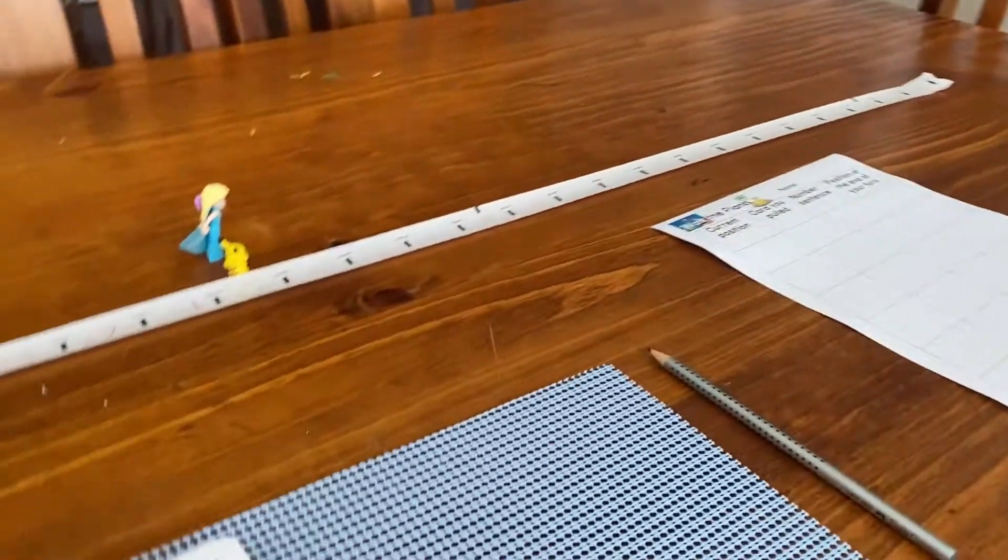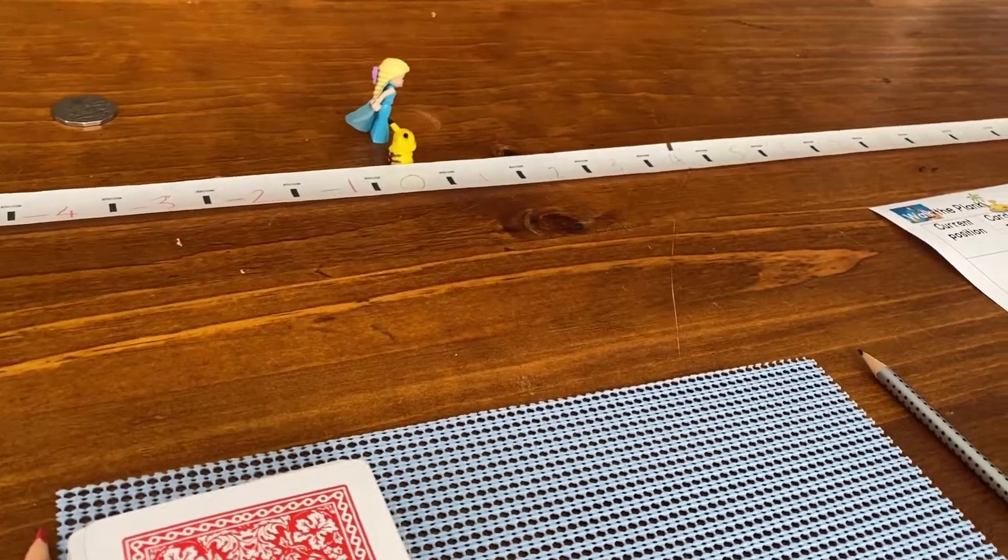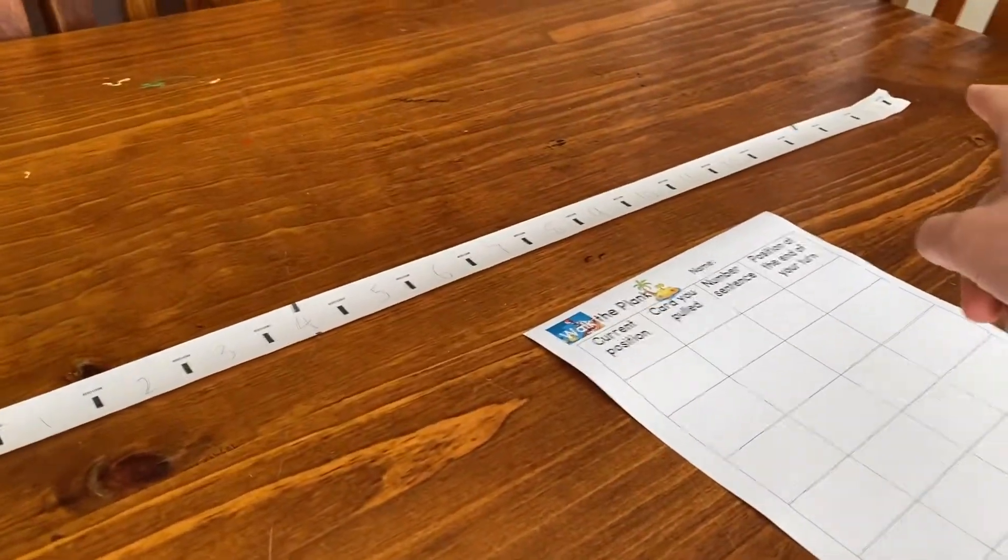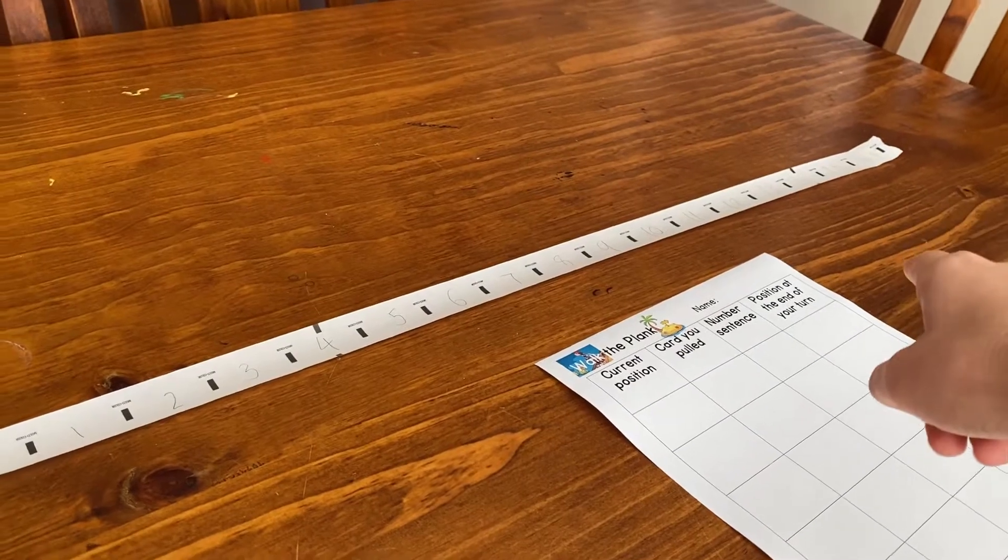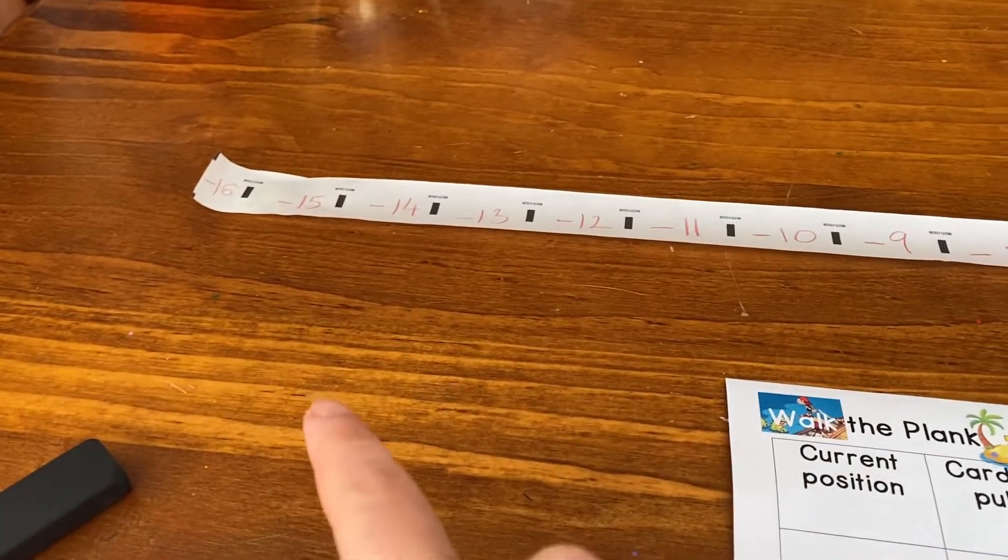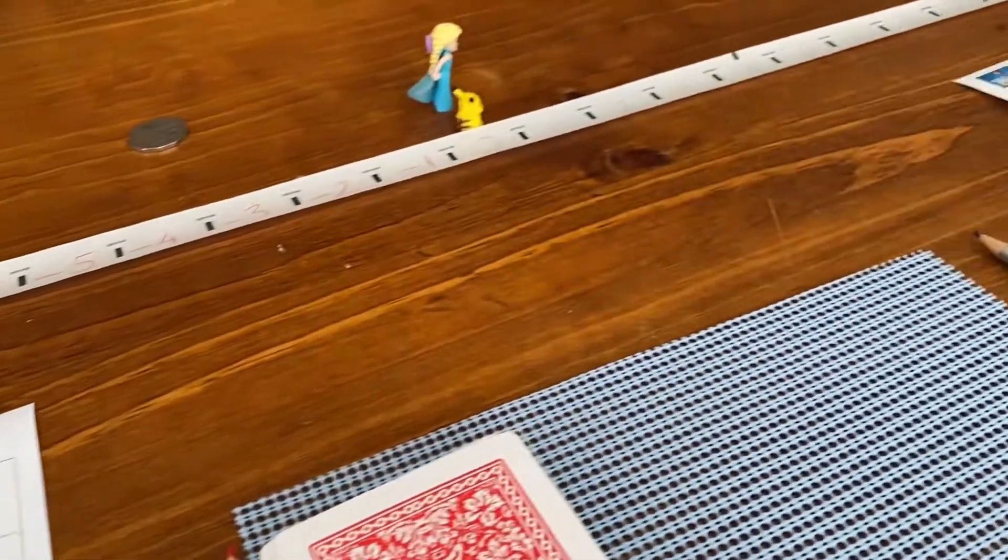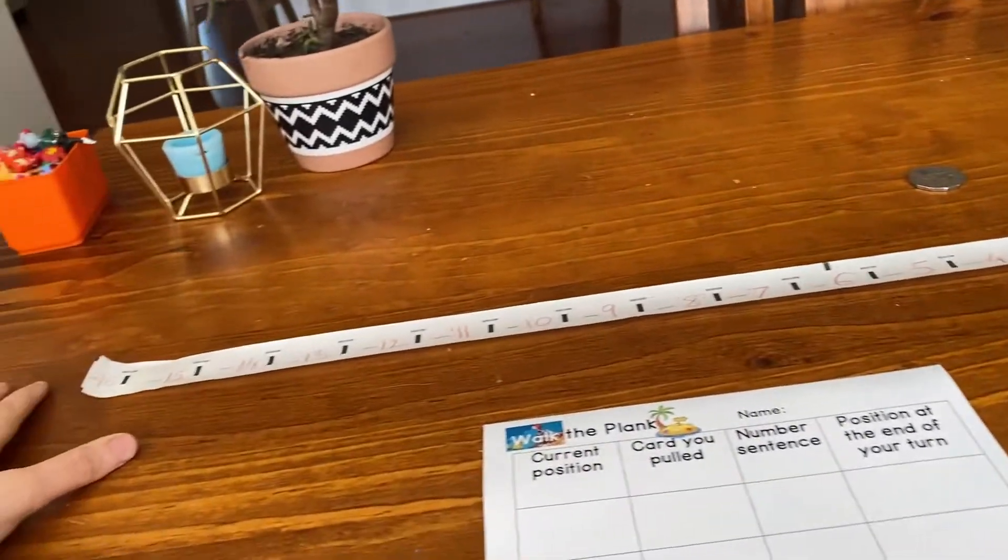Here with Alana and we are playing Walk the Plank. Alana's first time playing the game. Basically you want to get to the positive end, 16, and you want to stay away from the negative end, negative 16, or however long your measuring tape has gone on your table, because we can pretend this is like a terrible place.